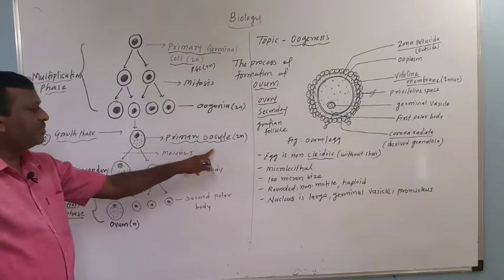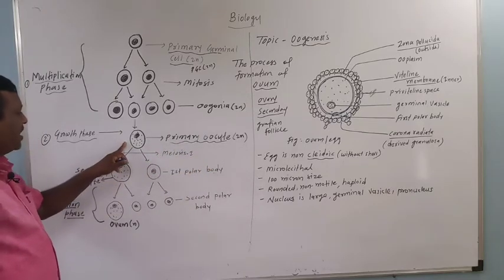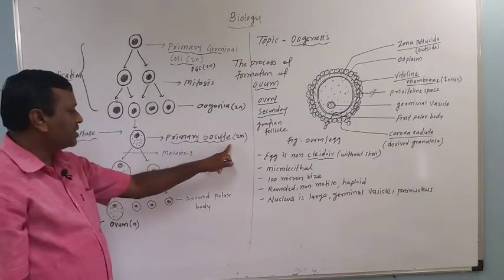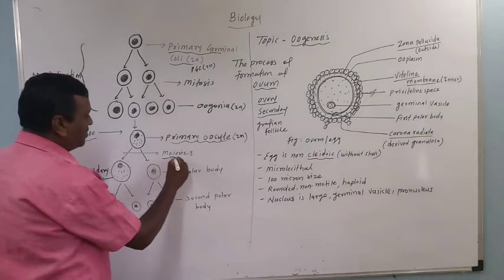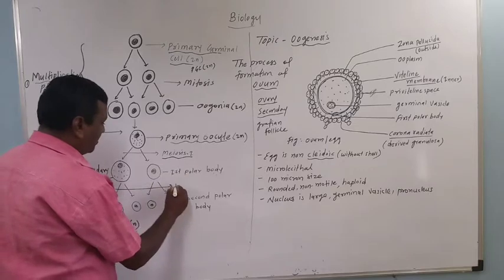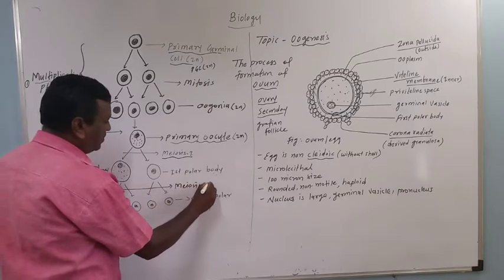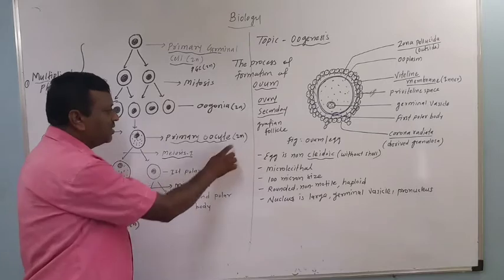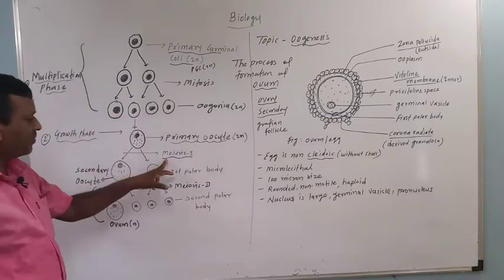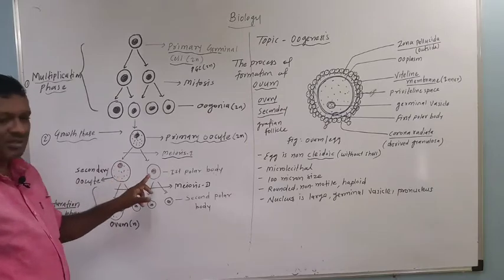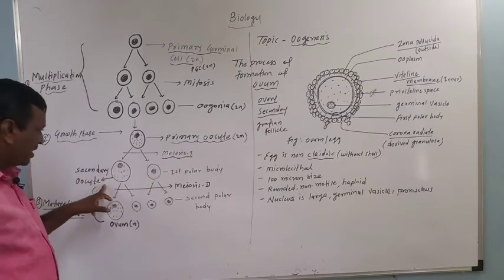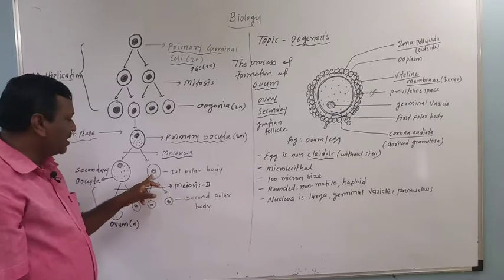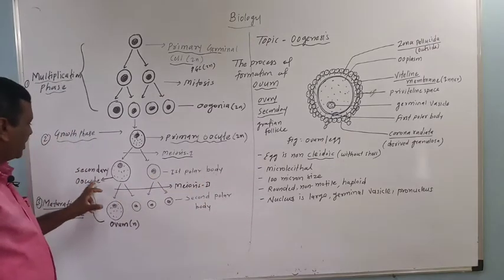These primary oocytes undergo the maturation phase. Primary oocytes are diploid and undergo meiosis first and meiosis second. During meiosis first, there is formation of two unequal cells: one larger cell known as the secondary oocyte, and one smaller cell known as the first polar body.